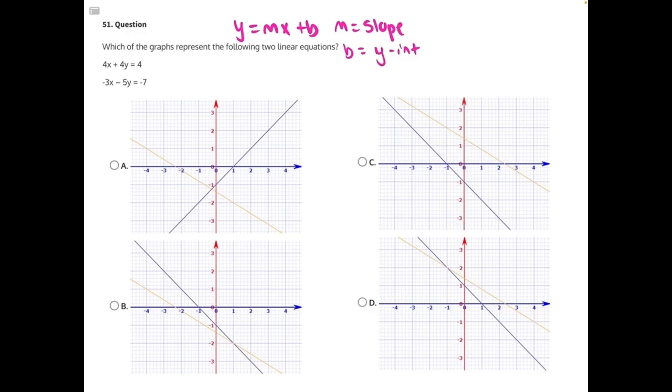Let's take this first one. 4x plus 4y equals 4. If we want to isolate y, we need to do opposite operations. 4x is positive. The opposite would be subtracting it from both sides. These will cancel, leaving us with 4y equals negative 4x plus 4.